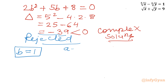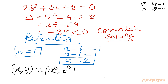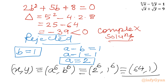From equation a minus b equals 1, substituting b equals 1: a minus 1 equals 1, so a equals 2. Now writing the x and y values as an ordered pair (x, y) equals (a⁶, b⁶), which is (2⁶, 1⁶), which is (64, 1). This is our final and ultimate answer for Method 1.